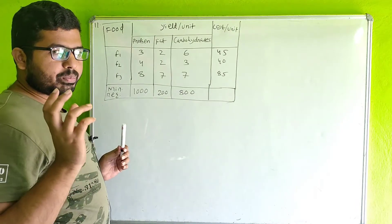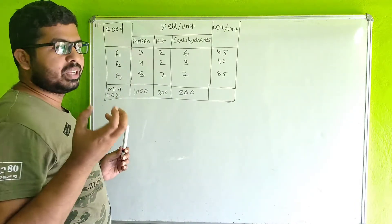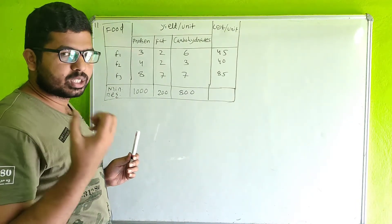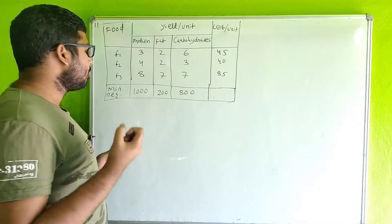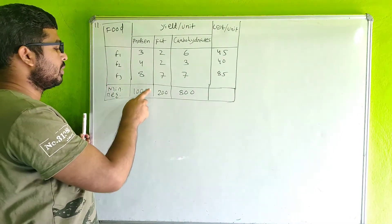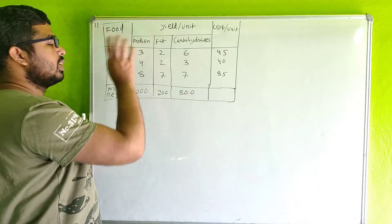If you have a minimum protein requirement which is healthy, the minimum protein requirement is 1,000 units.